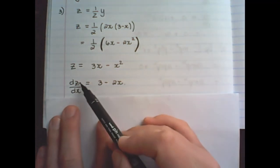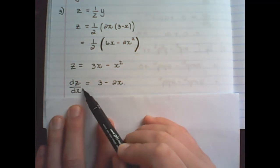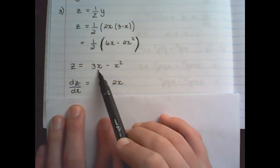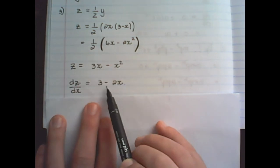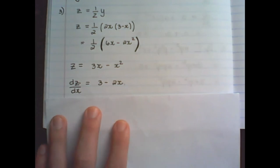Therefore, dz/dx, now I can differentiate x's, because I have x's in the equation of z, which is 3 minus 2x.